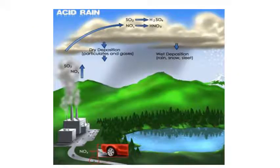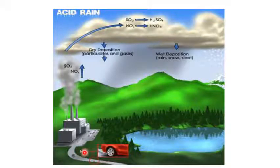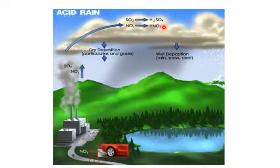Acid Rain is mainly formed due to the 3 important gases: CO2, NO2, and SO2. These gases are mainly responsible for the formation of Acid Rain. Acid Rain means the presence of excessive acid in rain water — specifically Sulphuric Acid and Nitric Acid — which is responsible for Acid Rain.